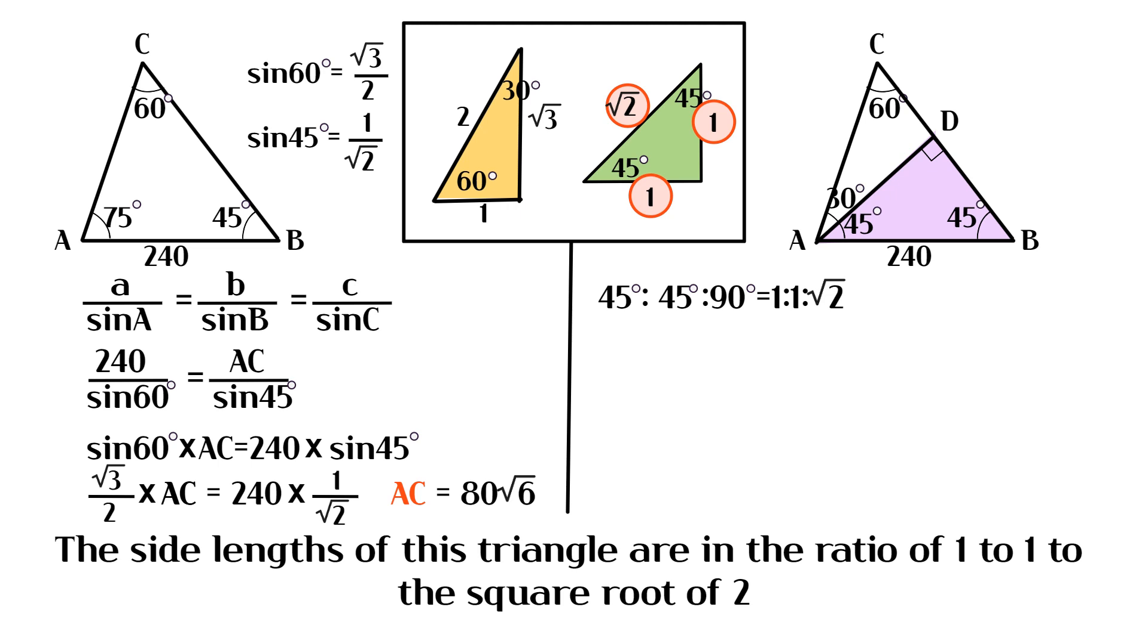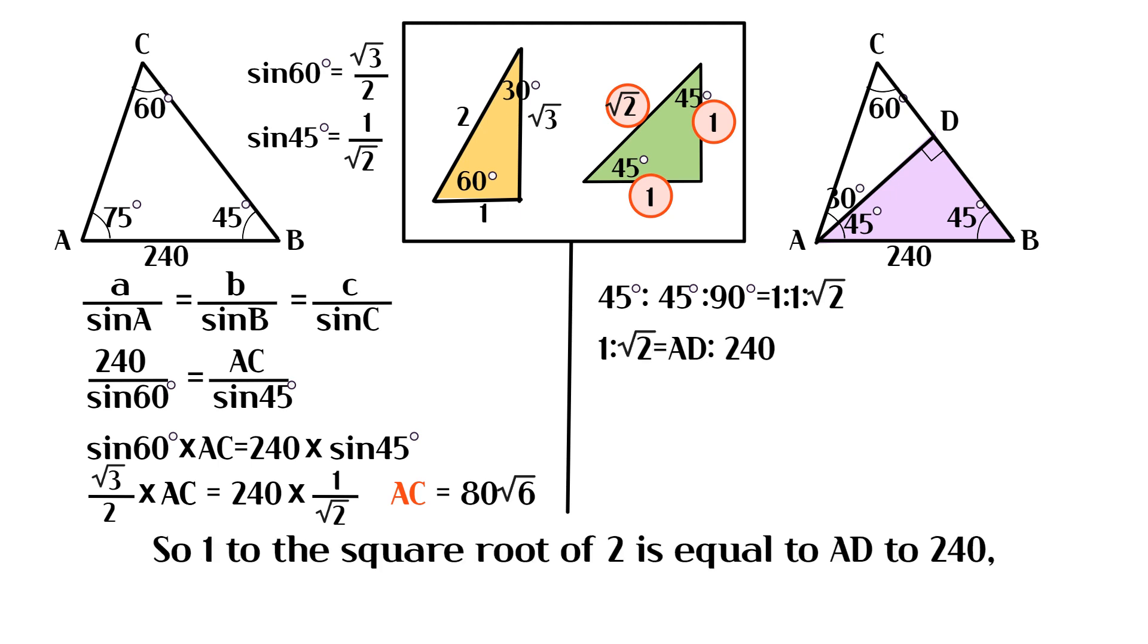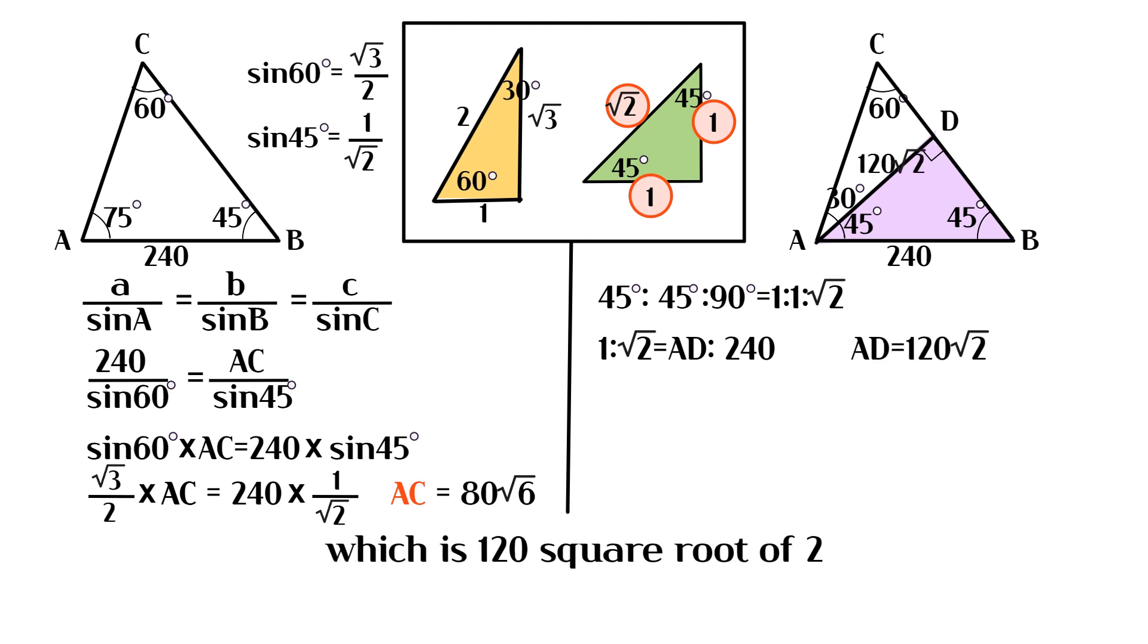The side lengths of this triangle are in the ratio of 1 to 1 to the square root of 2. So 1 to the square root of 2 is equal to AD to 240, which is 120 square root of 2.